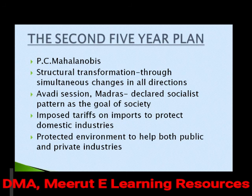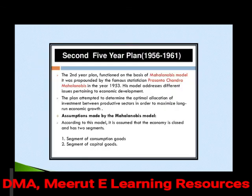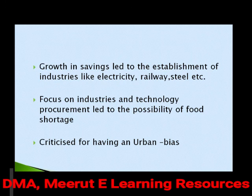The protected industrial environment helped both public and private industries. The second five-year plan focused on consumption goods as well as capital goods. Growth in savings led to the establishment of industries like electricity, railways, and steel — the most progressive industries of this plan. However, food shortages again occurred because of the focus on industries, and the plan has been criticized for an urban bias, as major infrastructure was located in big cities, sidelining the rural section.